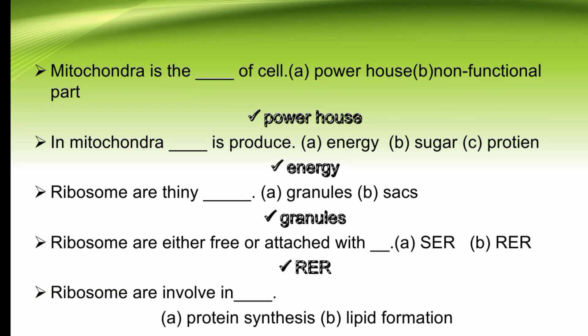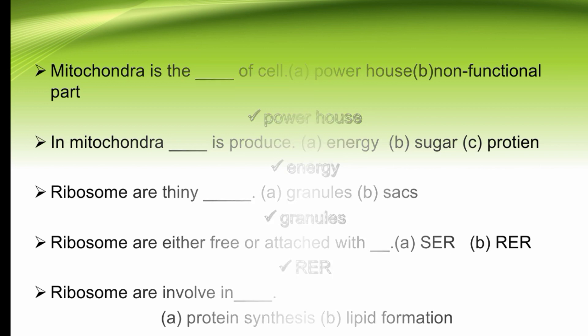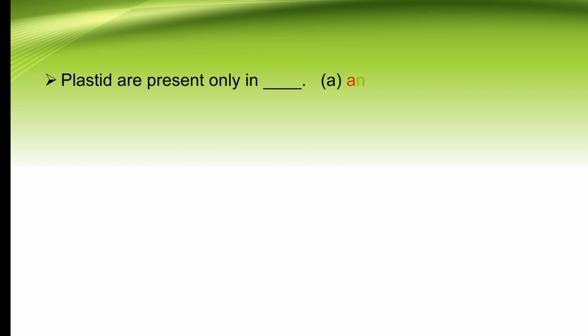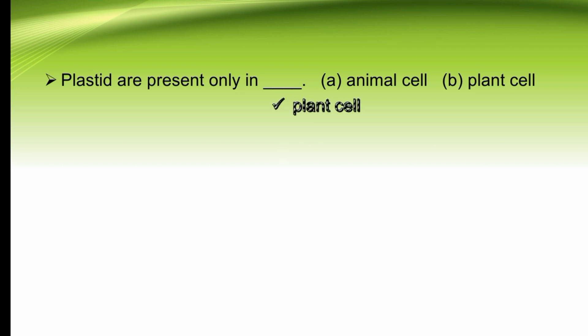Ribosomes are involved in dash — protein synthesis or defect formation. Ribosomes are involved in protein synthesis. The right option is A. Plastids are present only in dash — animal cells or plant cells. Plastids are present only in plant cells and absent in animal cells. The right option is B.